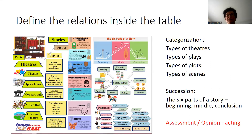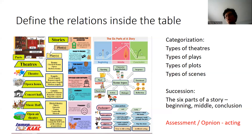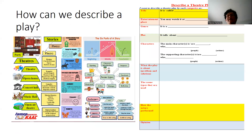Let's look at our table and our visual and decide what we have here. We already said that we have categorization: types of theaters, types of plays, types of plots, and also types of scenes. We have succession — the six parts of the story — where we can say firstly, secondly, thirdly. And we have opinion, so we can talk about our opinion. Now let's use all this vocabulary to describe a theater play.